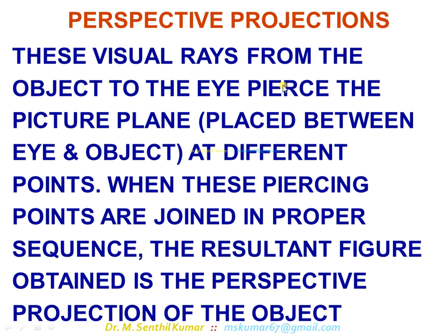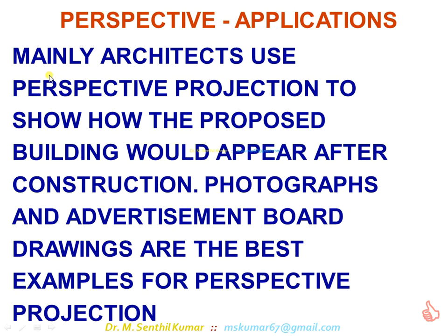These visual rays from the object to the eye pierce the picture plane, which is placed between the eye and the object, at different points. When these piercing points are joined in proper sequence, the resultant figure obtained is the perspective projection of the object. Architects mainly use perspective projection to show how a proposed building would appear after construction. Photographs and advertisement board drawings are the best examples of perspective projection.